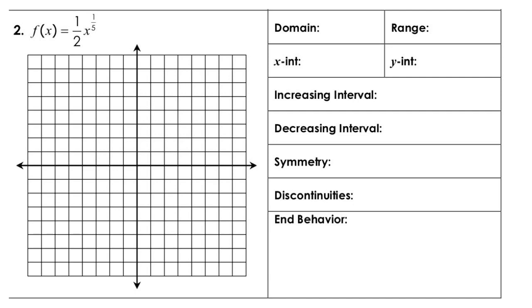For this one, with it being x to the 1/5, it would be good to compare this to x to the 1/3, which is the cube root. The cube root function really looked like the cubic function on its side. We know that this function is going to do the same thing. This is odd, and this should be symmetric about the origin, because I can take odd roots of negatives and still have points, but I can't do even roots.